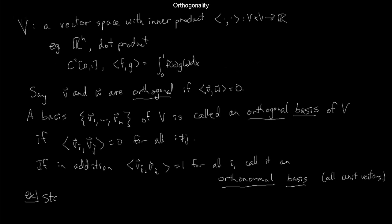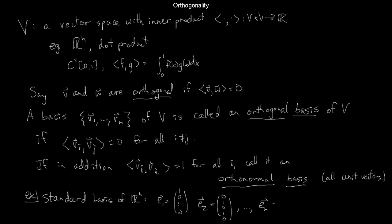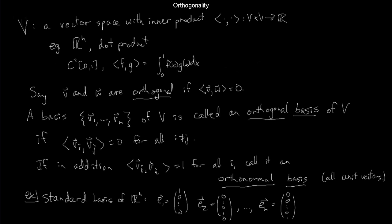A great example to bear in mind is the standard basis of Rn. E1 is the vector with 1 in the first slot and 0s elsewhere; E2 has a 1 in the second slot and 0s elsewhere; and so on, up to En which has a 1 only in the last slot. It's easy to check that this is an orthonormal basis — it's a good example to keep in mind.